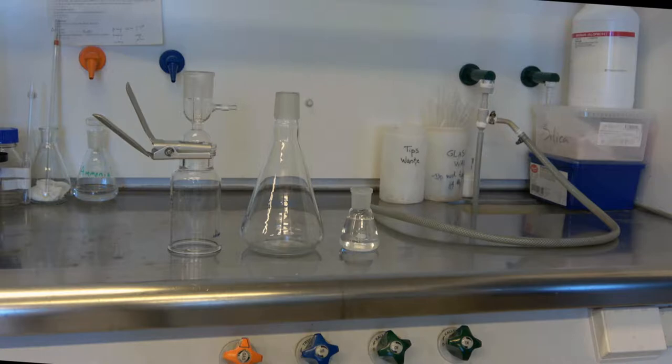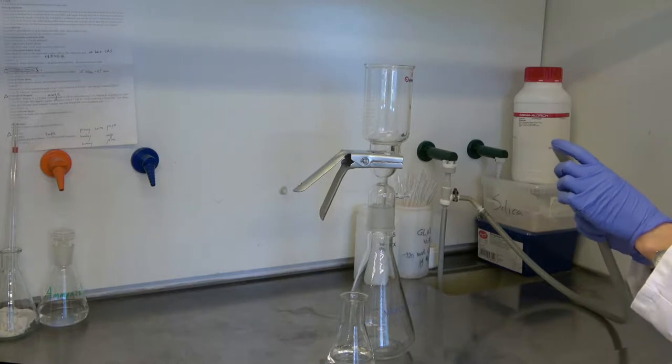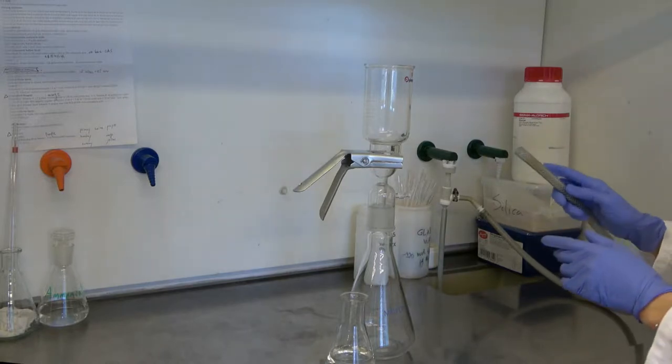The filter glass is placed on top of the collection flask. The water pump is turned on and once the vacuum can be felt, it's connected to the nozzle of the filter glass.